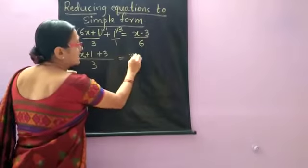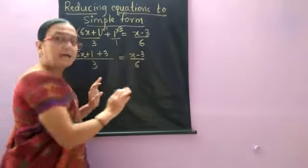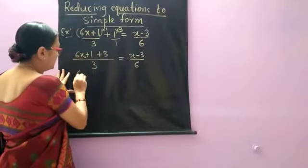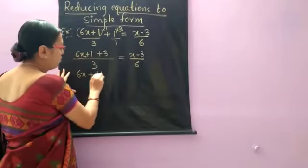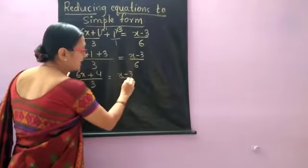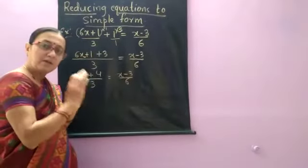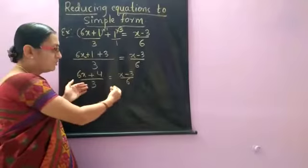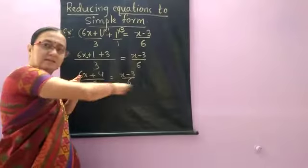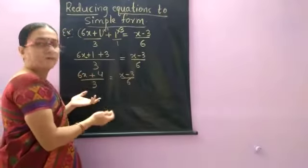This is equal to x minus 3 by 6 as it is. Now here again one more step. 6x plus 4 by 3 is equal to x minus 3 by 6 as it is. Now the next step. We have to reduce it to simple form. With a fraction we should bring it to a single line equation now. How do we do it?